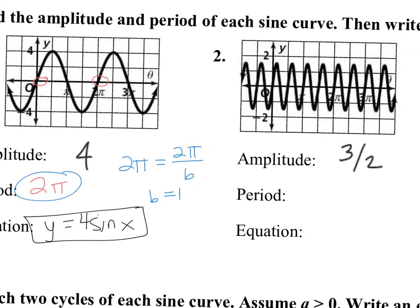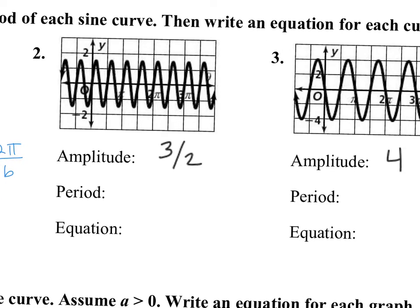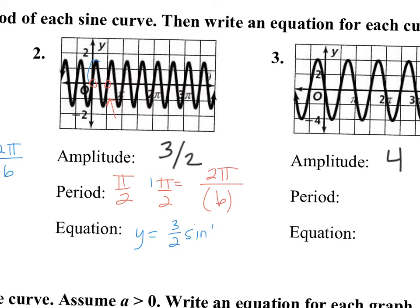The second one: the period is going from 0 to π/2, so the period is π/2. You do 2π divided by B, so π/2 equals 2π divided by B, meaning B has to be 4. Two-fourths reduces to one-half. So it's going to be y equals positive 3/2 sine of 4x, because it's going up.